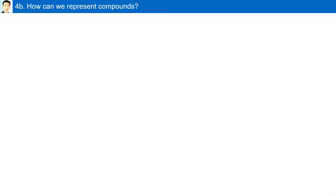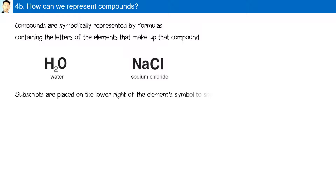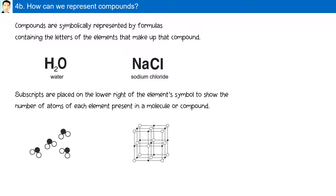How can you represent compounds? Compounds are symbolically represented by formulas containing the letters of the elements that make up the compound. For example, water (H₂O) is composed of two hydrogen atoms and one oxygen atom, while sodium chloride is made up of a sodium atom (Na) and a chlorine atom (Cl). Subscripts are placed on the lower right of the element's symbol to show the number of atoms of each element present in a molecule or compound.